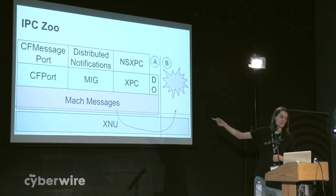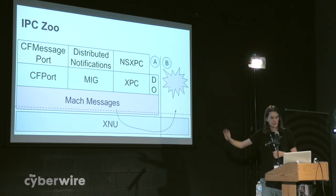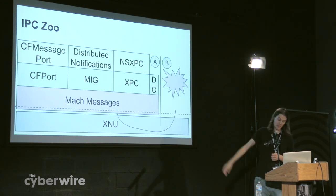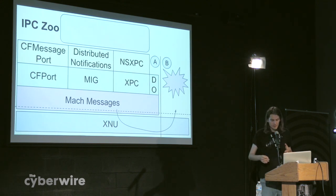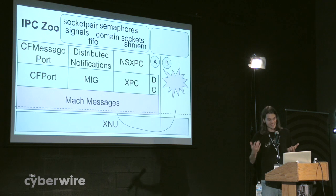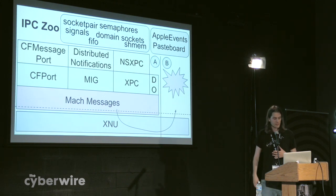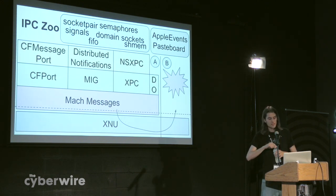We'll also show a demo of local privilege escalation using distributed objects. Since OSX is a Unix-based system, you also have all the IPC mechanisms you'd expect on any Unix system: signals, domain sockets, shared memory, FIFOs, semaphores, socket pairs. In addition, there are Apple Events and pasteboard. As you can see, there really are a lot of different types of IPC systems available on OSX. For some of these — like how does NSXPC actually work, or how do distributed objects work — if you try and search online for any information about how they're actually implemented, you will find absolutely nothing.